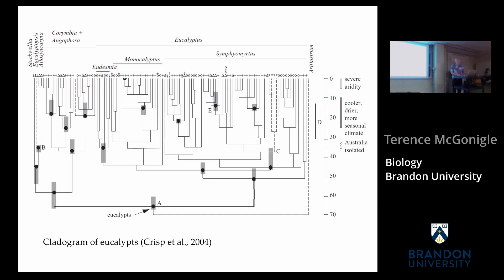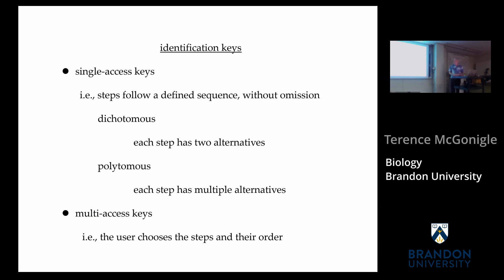So how do we work with 934 species of trees that look rather similar? We use keys. Single-access keys involve a number of steps to follow in a defined sequence — you have to start at step one and can't miss a step. Decisions at each point can be dichotomous, with two alternatives, or polytomous, with multiple alternatives. More interestingly, multi-access keys using computer-based systems online allow the user to choose which characters to examine and in what order — much more flexibility.